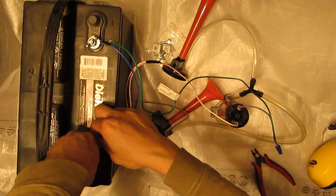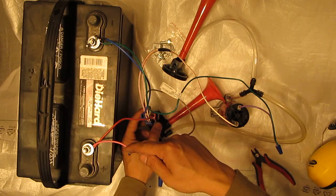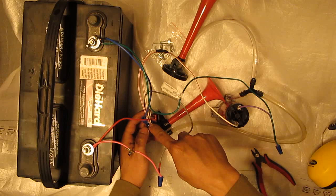So basically pin 86, pin 86 of the relay, goes out to the switch, and then from the switch to positive of the battery.